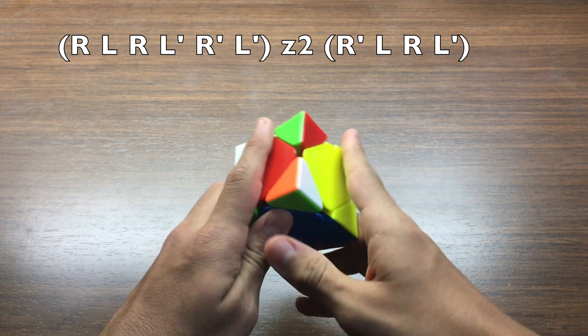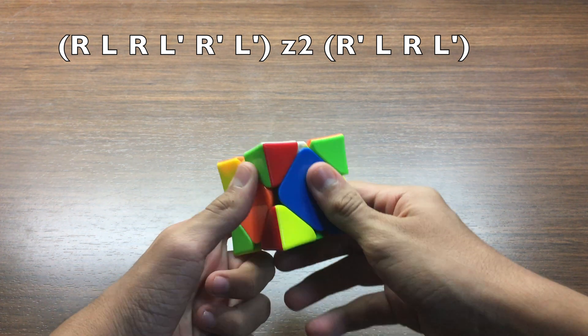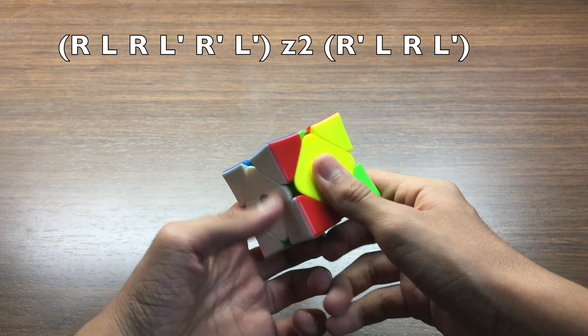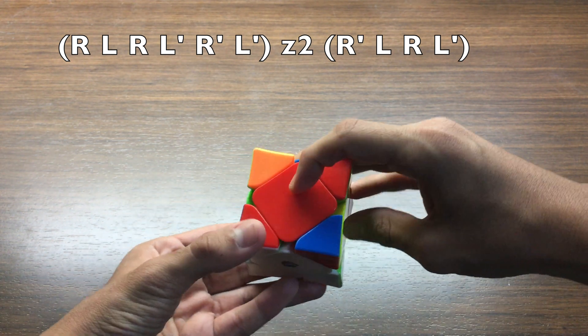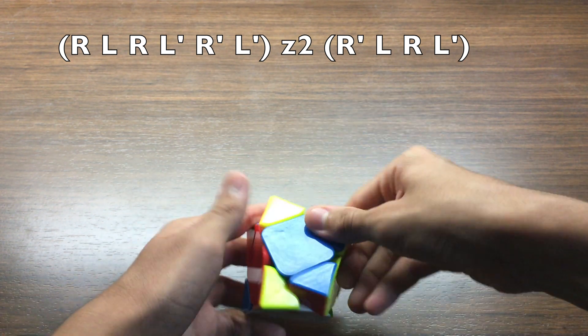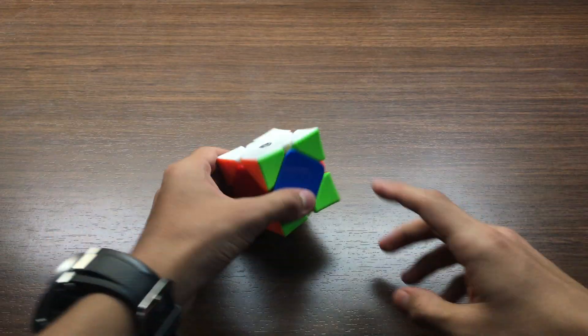R L R L prime R prime L prime, then you rotate this way and then you do a sledgehammer. And here's how you execute it fast.